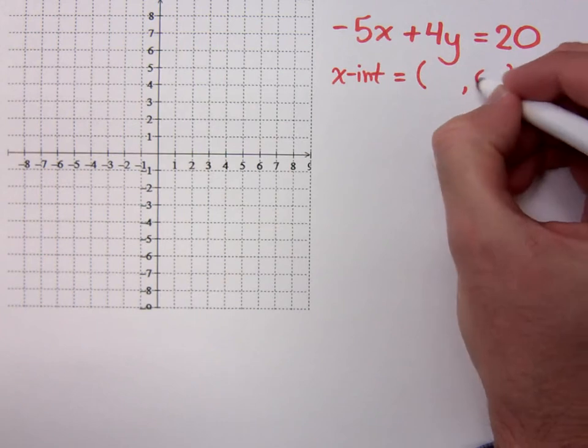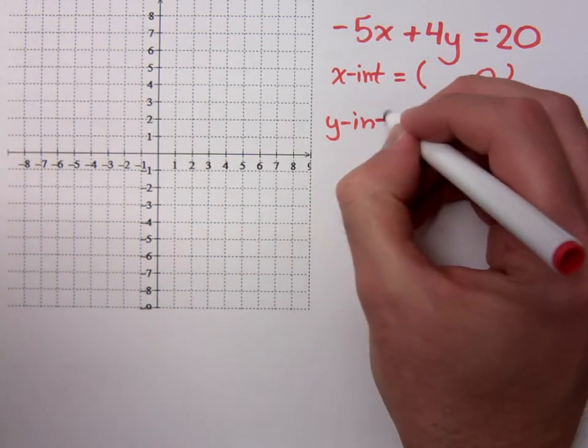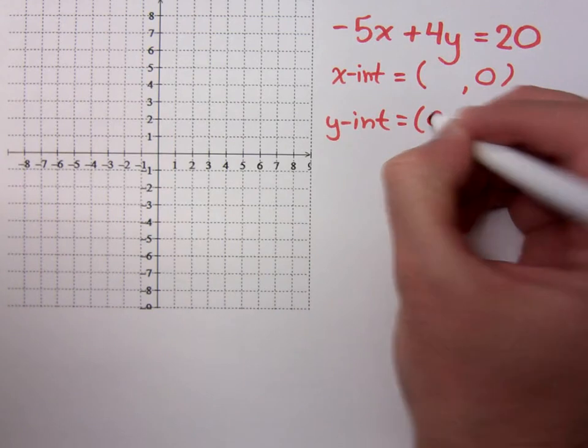What do you know about the x-intercept? Y equals 0. What do you know about the y-intercept? The x-coordinate is going to be 0.